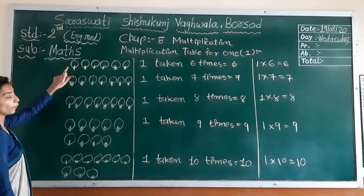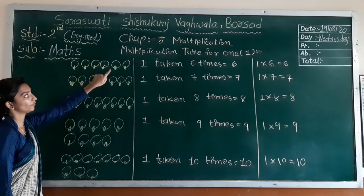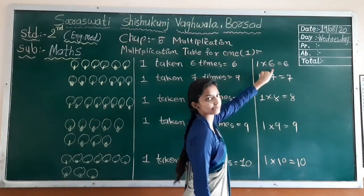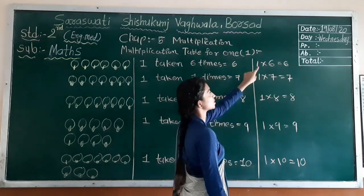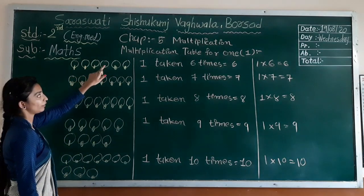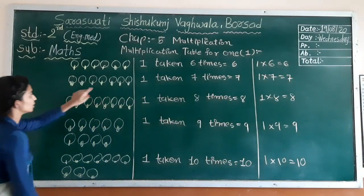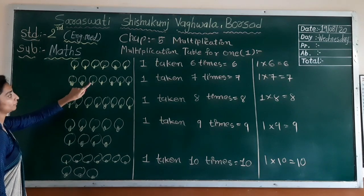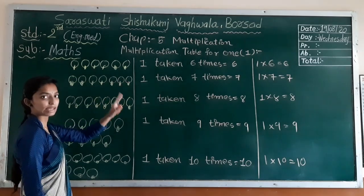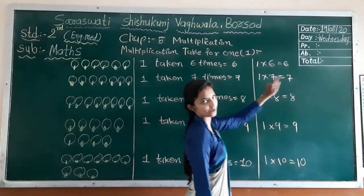Now, one taken how many times? Count: one times, two times, three times, four times, five times, six times. So one taken six times, that means one multiplied by six equal to six — because one of them repeatedly added six times. Counting one through seven times, one of them taken seven times, so one multiplied by seven equal to seven. Counting one through eight times, so one multiplied by eight equal to eight.